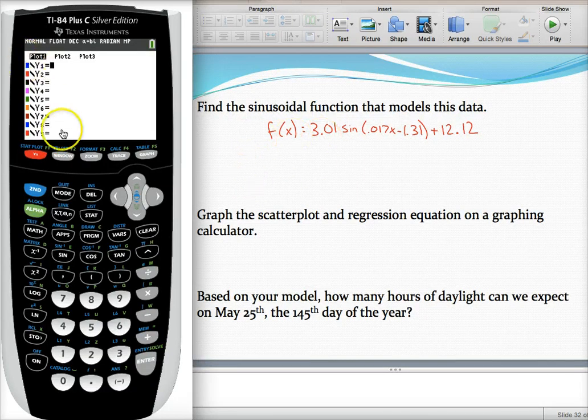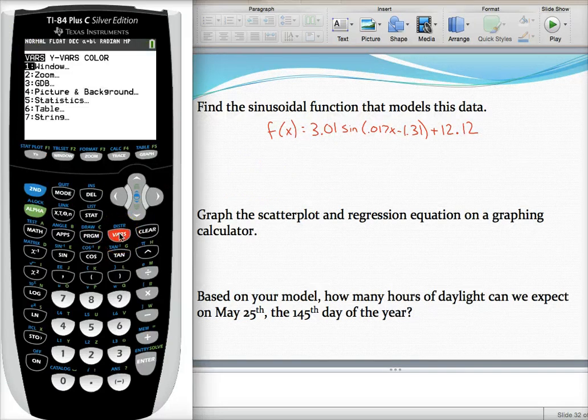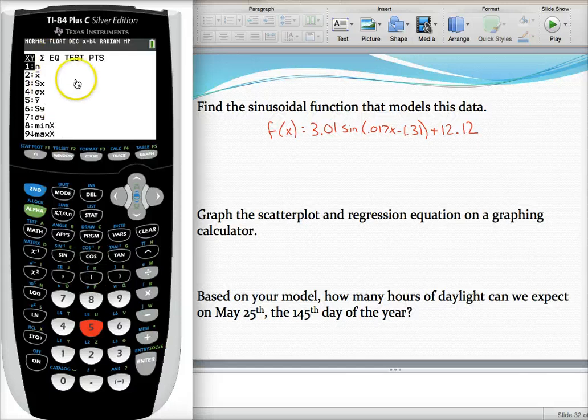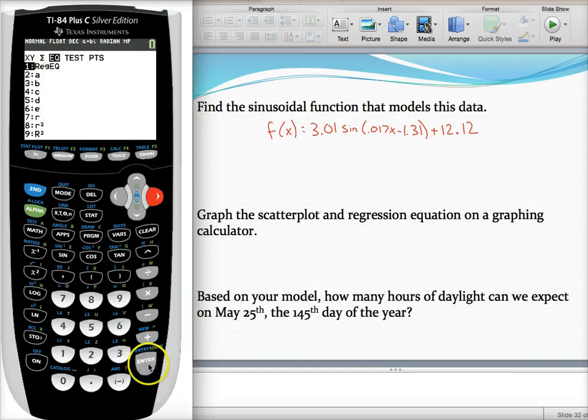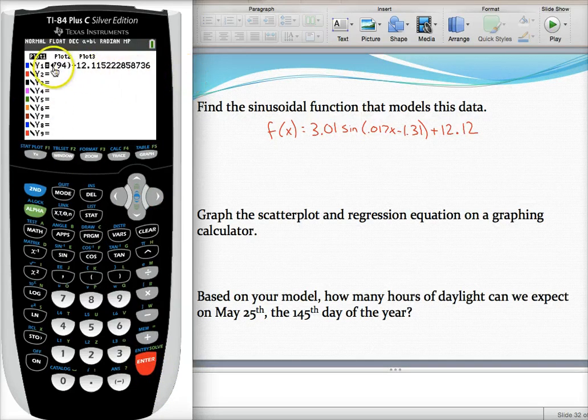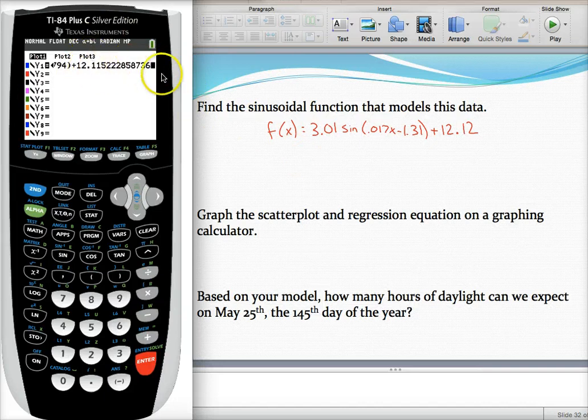To do this in Y equals, press the VARS button located next to the clear button. And then since we're working with statistics, select option 5. And then go over to EQ, which stands for equation. And you'll see your first option there is regression equation. Once you select that, it's really cool. It automatically puts in that last regression equation you found with all those decimals, so it hasn't rounded it. Well, it has rounded, but it has rounded it to 10 decimal places.